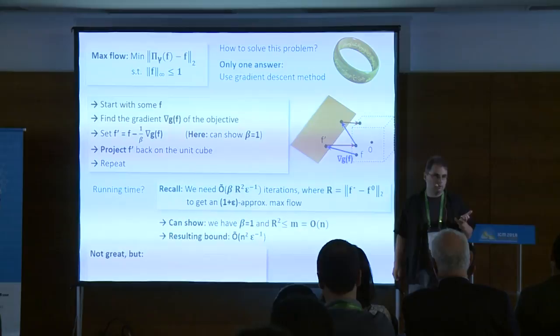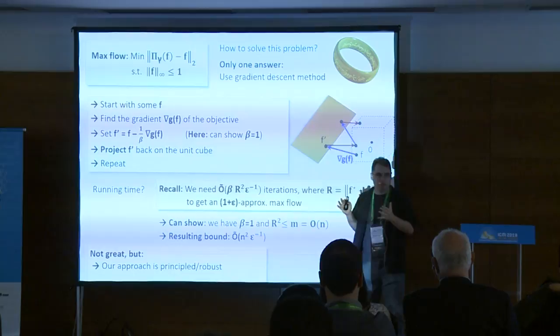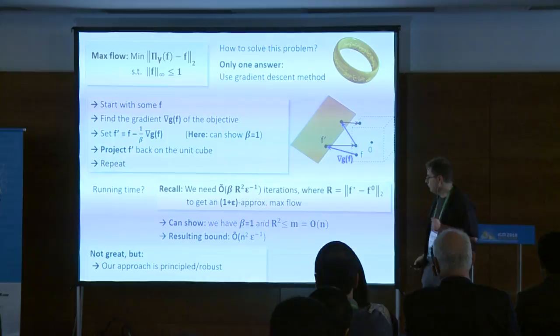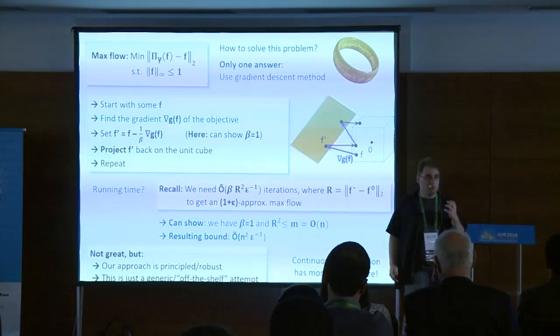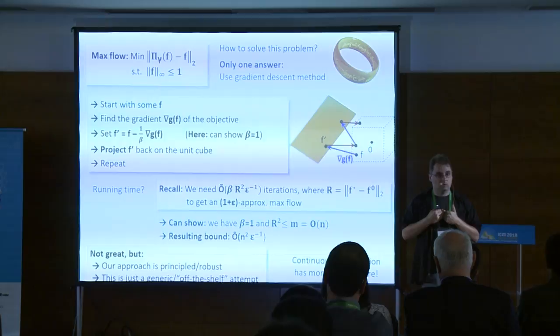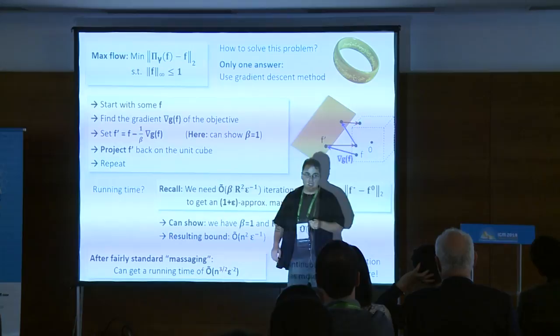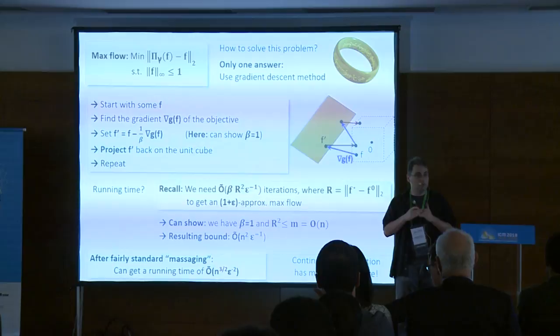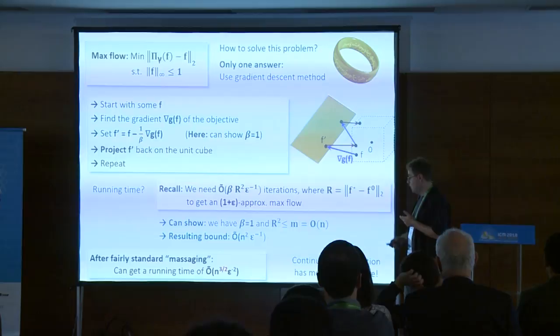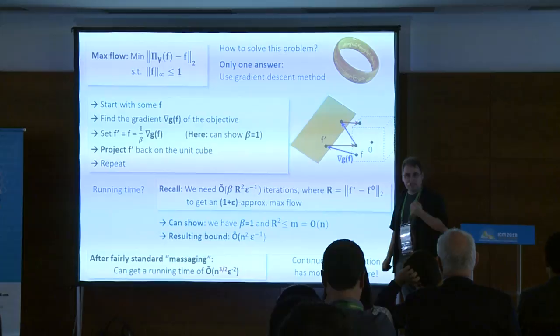With some standard massaging that is completely standard from the book, you can immediately improve this algorithm to achieve n-to-the-three-halves running time — matching the best we know from standard algorithms, very easily. But of course the question is: how do you improve over n-to-the-three-halves? Can you actually go beyond this barrier? That's where things start to get interesting.